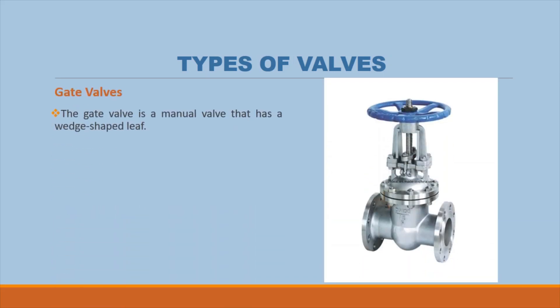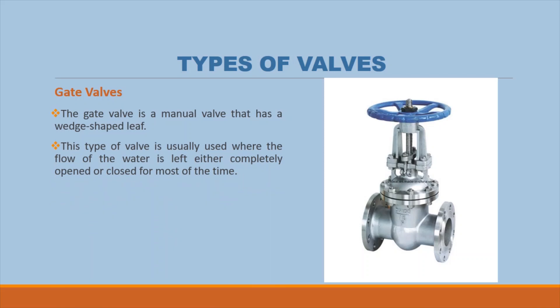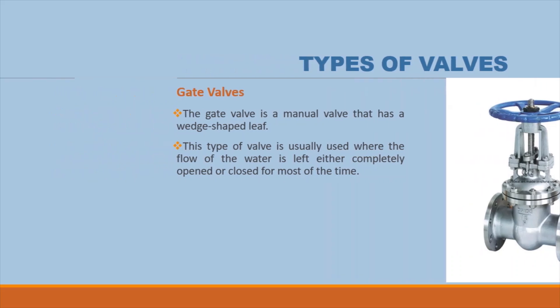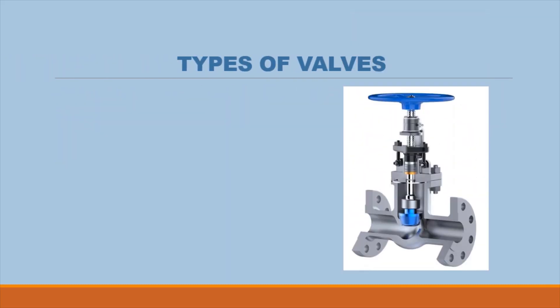Types of valves — Gate valves: the gate valve is a manual valve that has a wedge-shaped lift that, when closed, seals tightly against two metal seats set at slight angles. This type of valve is usually used where the flow of water is left either completely open or closed for most of the time.